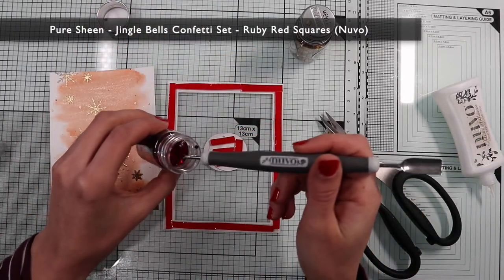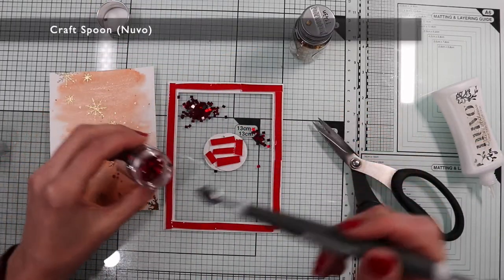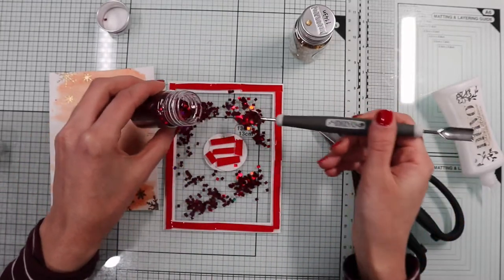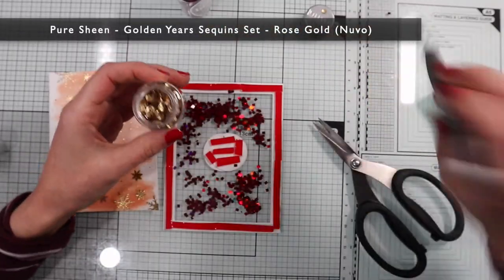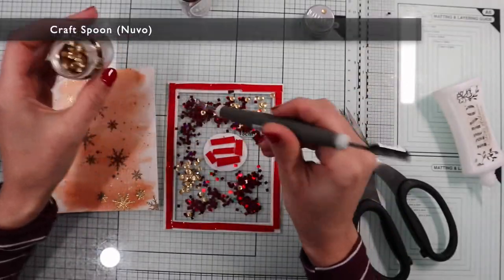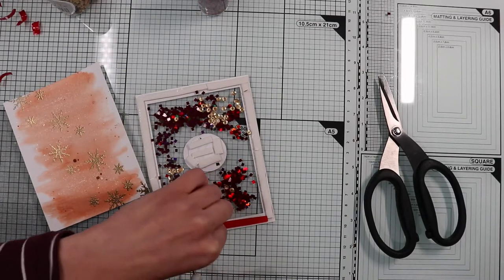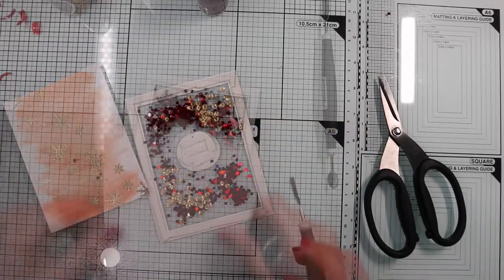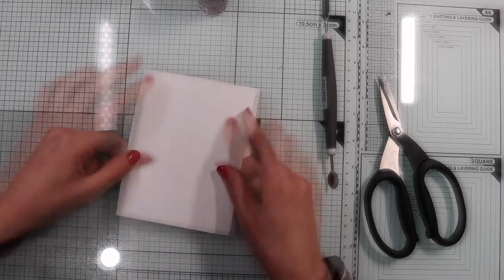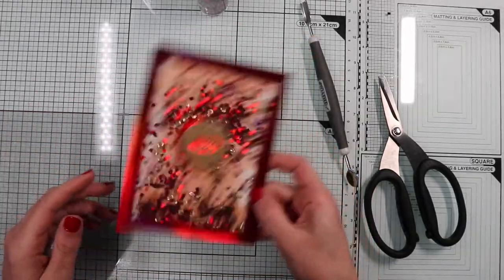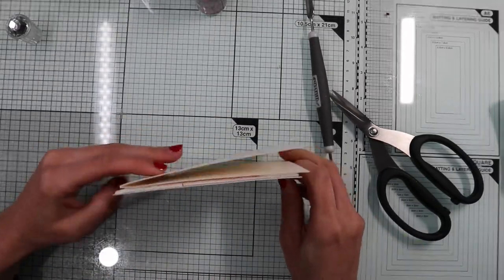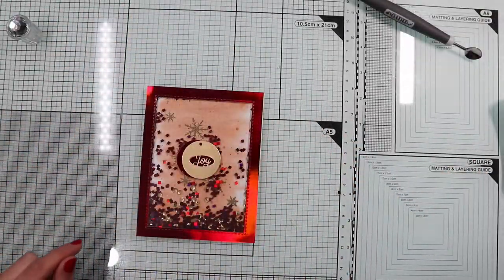Now it's time to fill the shaker card with the elements. In particular, I will use this iridescent red confetti that match the color of the frame and this golden sequins that match the color of the snowflakes in the background and in the tag. I'm going to remove the protective film from the foam tape and stick the background of my shaker card. I'm going to glue the panel onto the card base and I move on to the final details.